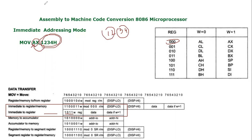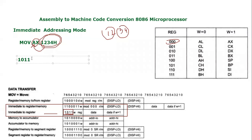Our instruction is immediate to register. The opcode is 1011 as defined — let me highlight it again — this is the format: 1011. Then you have to mention the W bit. Since it is a 16-bit register, the size of operation is 16-bit, so the W bit will be 1.